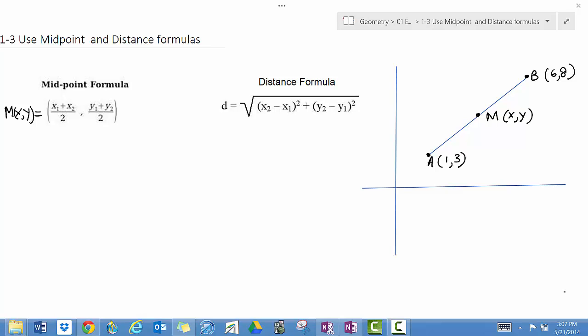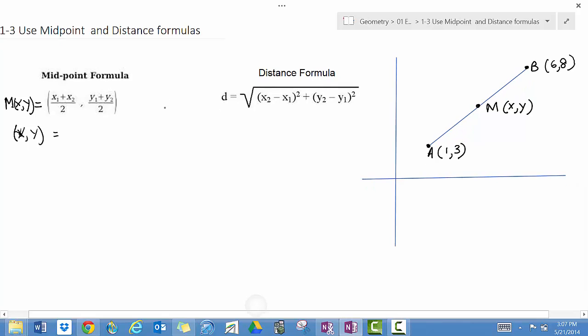The midpoint formula is straightforward. If I want to find the midpoint of A and B, then the coordinates (x, y) equal (x₁ + x₂)/2 and (y₁ + y₂)/2. What I'm going to do is, over here,